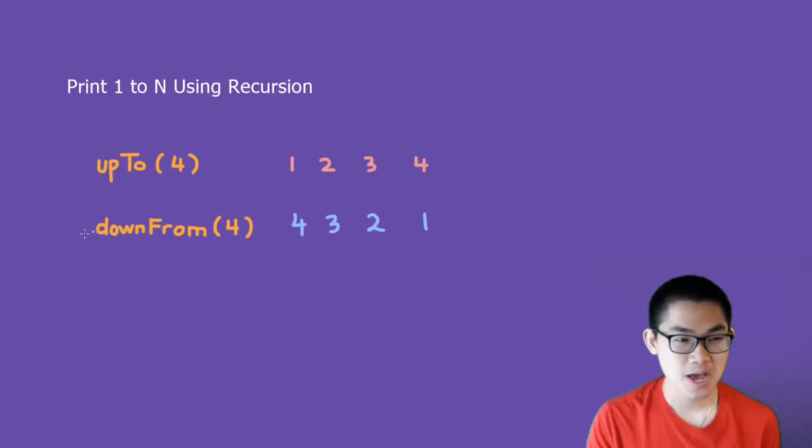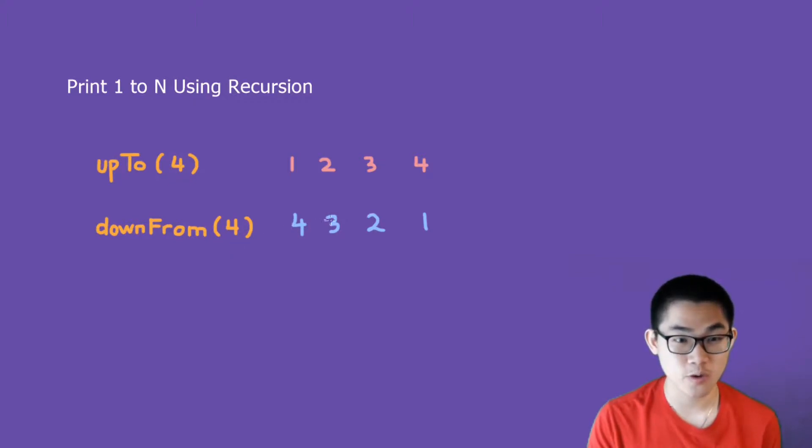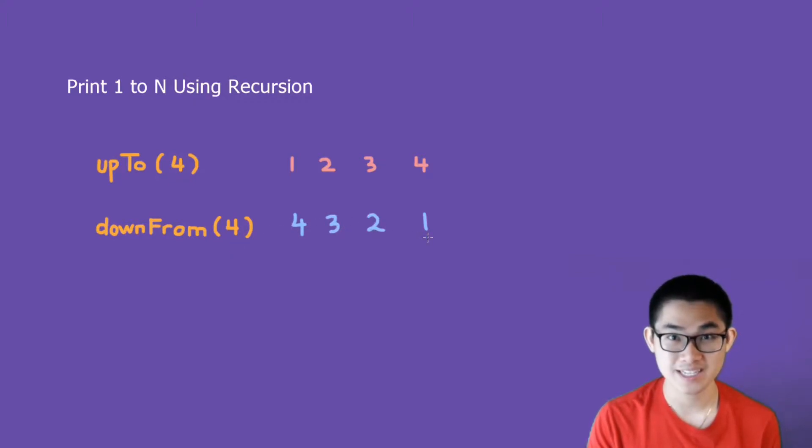Now, how about downFrom(4)? Well, similarly, it's just going to print 4, 3, 2, and 1.